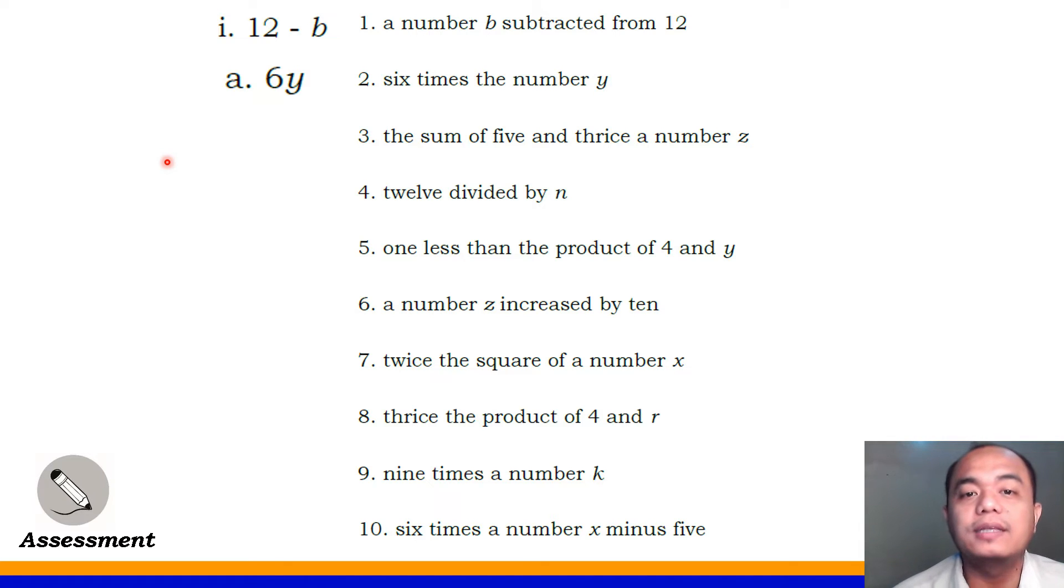Number 4, 12 divided by N. What's the answer? Letter J, it's 12 divided by N. Number 5, one less than the product of 4 and Y. Very good, 4Y minus 1. So, the meaning is that the product of 4Y will be subtracted by 1. Because of the word 'less than'.